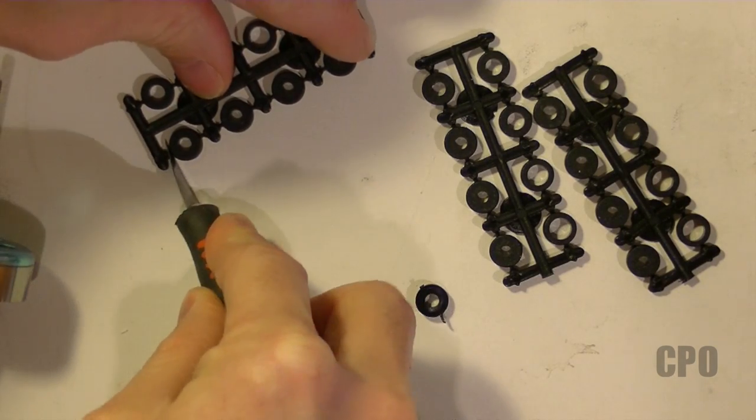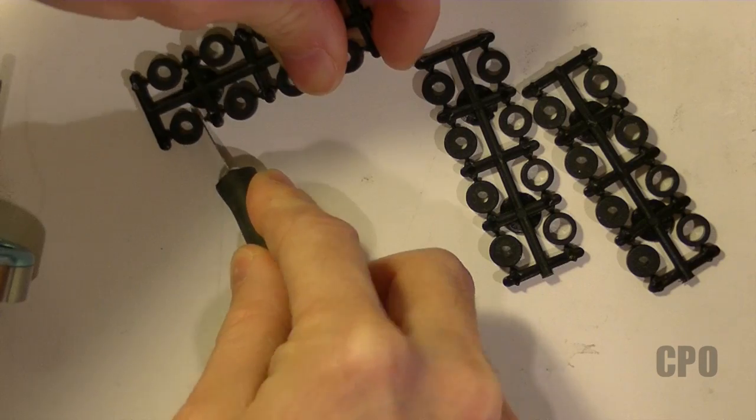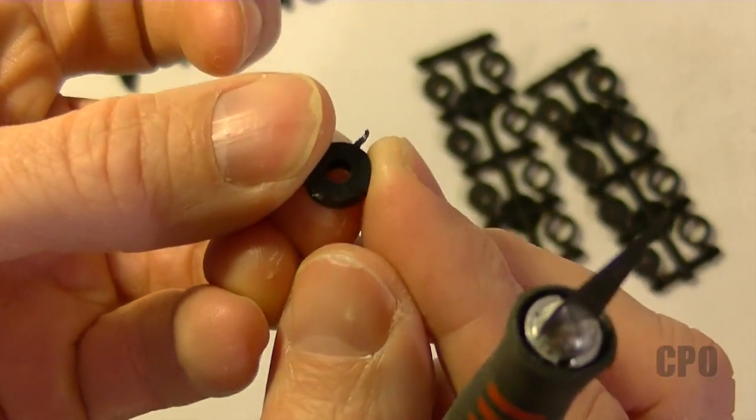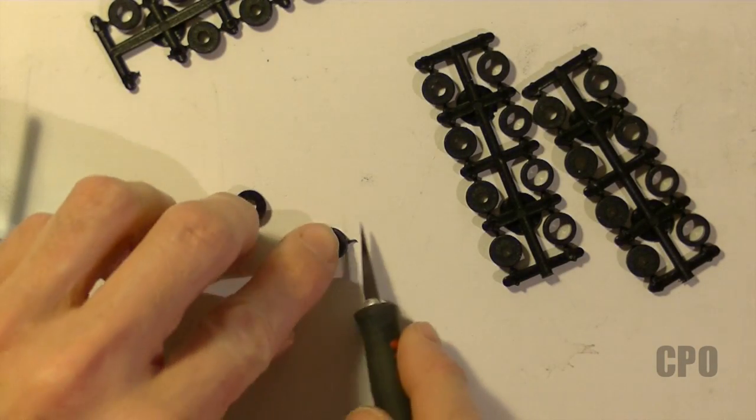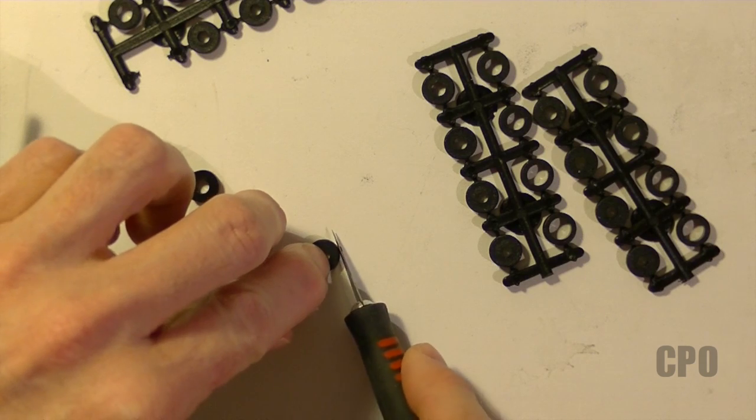Once you figure out which prop adapter you should be using, it's best to cut them out with a razor. Because if you don't, you'll end up with these little extra pieces of plastic from twisting them off. So you'll have to cut them off anyway to make everything fit cleanly. It's easier just to cut them off from the start.